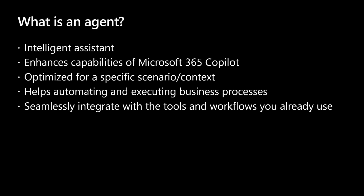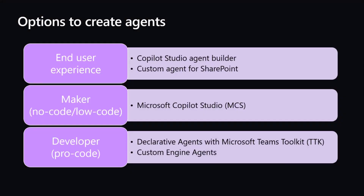We can also use agents to automate and execute business processes, based on a set of tools and workflows we already have in our environment. When we create agents, we have different options: we can use the Copilot Studio Gen Builder and the agent for SharePoint from the end-user experience, we can be makers using Copilot Studio, or we can wear the hat of a pro-code developer and use the Teams Toolkit to build declarative agents and custom agents.